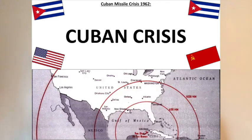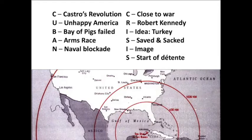So: C — Castro's revolution; U — unhappy America; B — Bay of Pigs fails; A — the arms race; N — the naval blockade; C — we're close to war; R — Robert Kennedy; I — Turkey idea; S — saved and sacked; I — image; and S — start of détente.